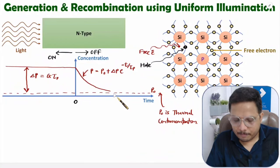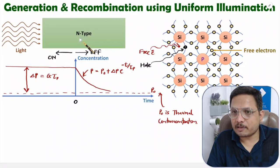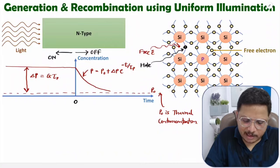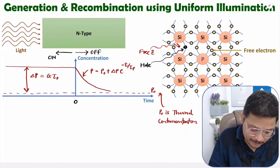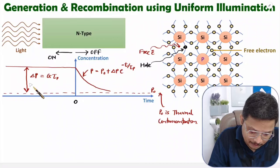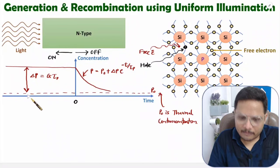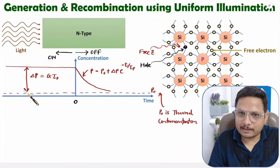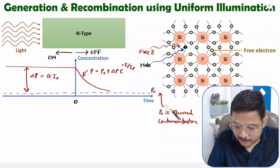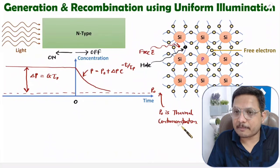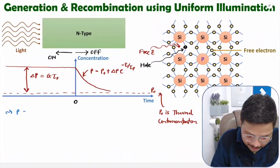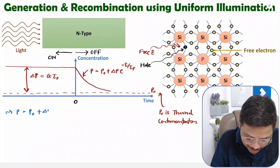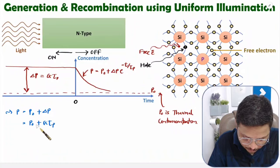The same thing will happen with p-type semiconductor material, in which the minority carriers will be electrons. There are a few essential things to note for solving examples. Technically, total concentration P equals P0 plus delta P, where P0 is the thermal concentration due to temperature rise, and delta P equals generation rate into the lifetime of holes.